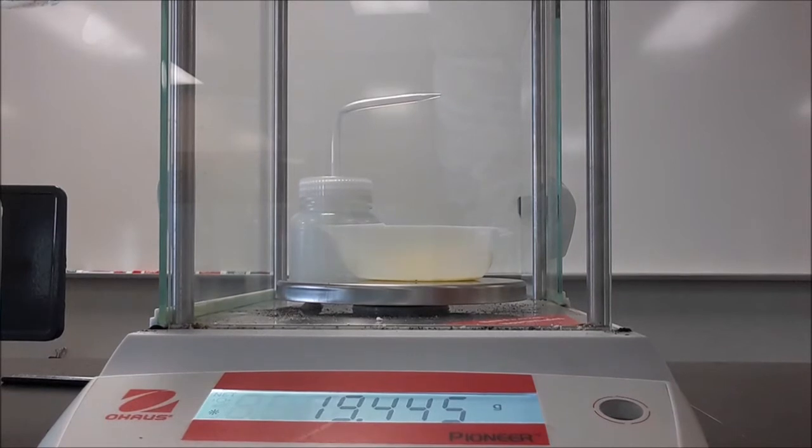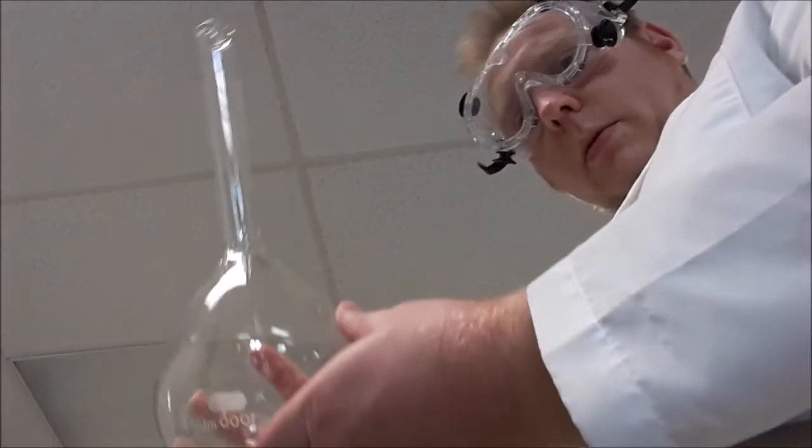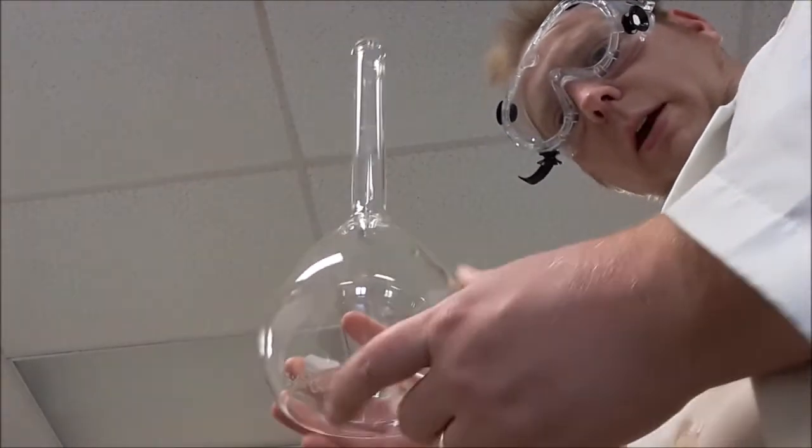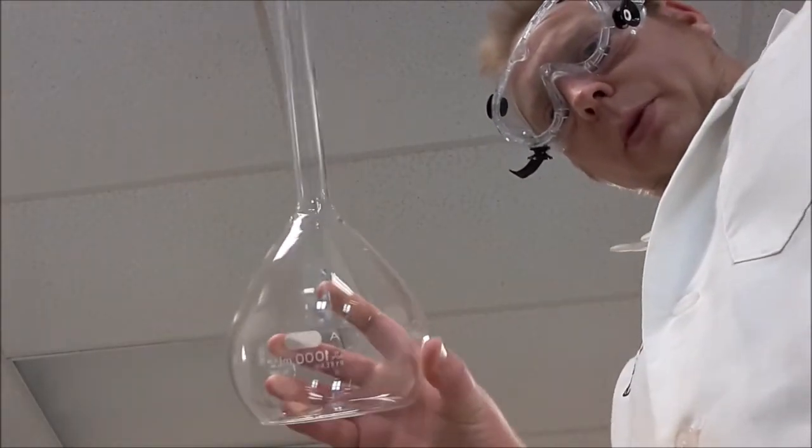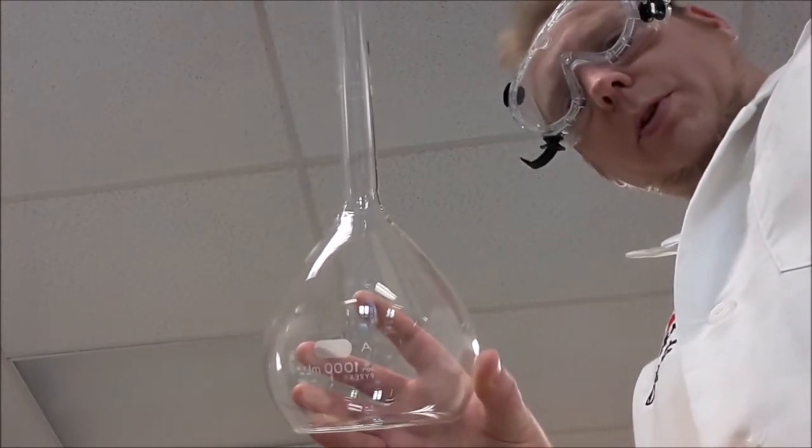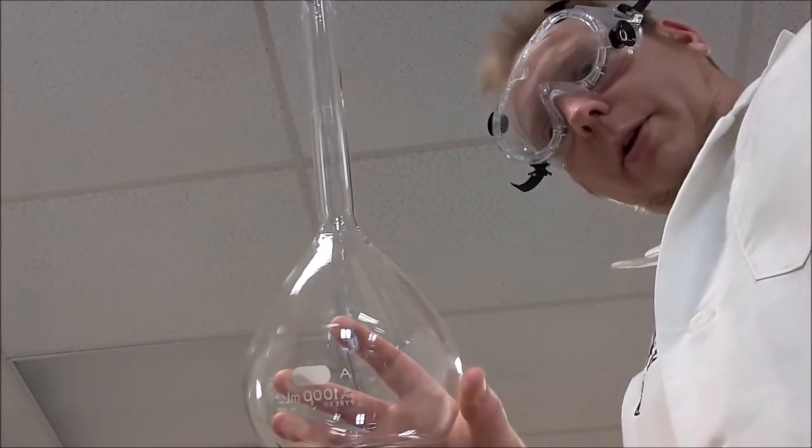Now that I have my mass, it's time to add it to the volumetric flask. So here's my volumetric flask. And as you can see, it's empty right now. If I try to put the solute in, I'm going to run into some odd problems. So the very first thing I want to do is to put a little bit of water in here first.